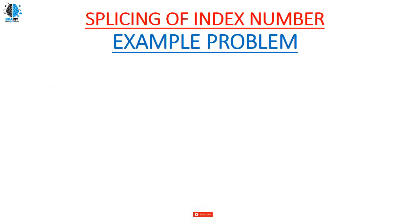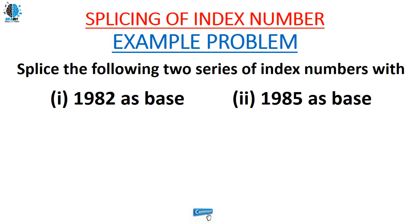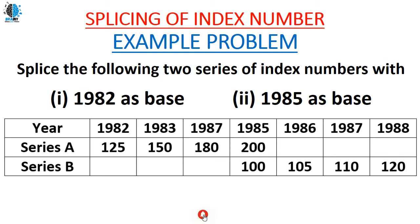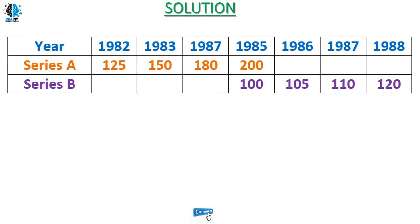Example problem: Splice the following two series of index numbers — series A with 1982 as the base year and series B with 1985 as the base year. The data covers years 1982 to 1988 for both series A and series B.